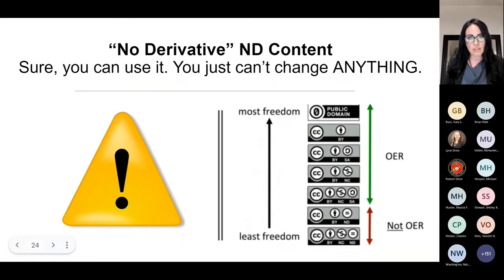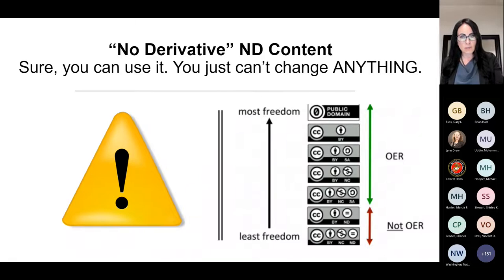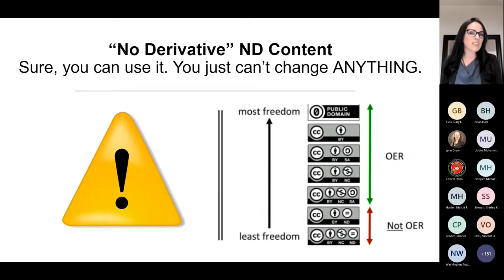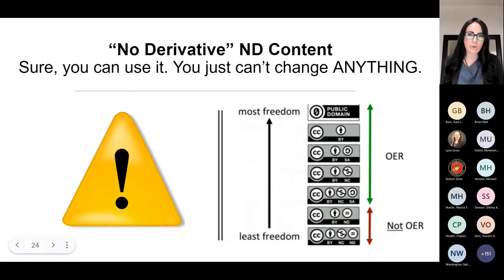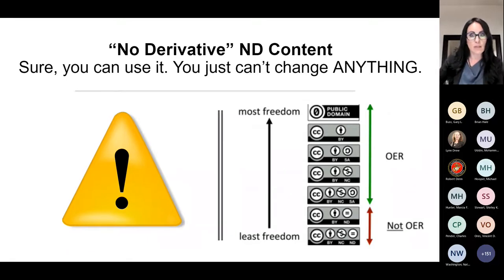One last comment about these no-derivative licenses. This is a scale showing the most open — CC BY at the top — to the most restrictive licenses. Some people in the open education community consider these no-derivative licenses not to be OER technically because they restrict you from some of those 5R permissions, like revising and remixing with other content. If you find this stuff and it's really good, use it — just know that you've got to use the entire chunk as it was and can't change anything about it, but it's still open.